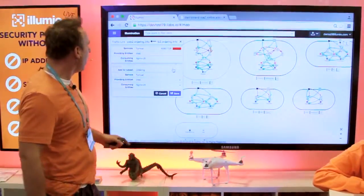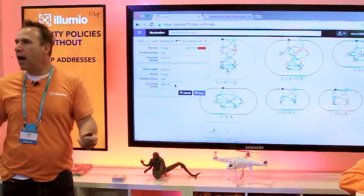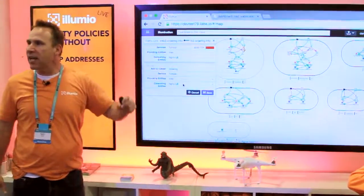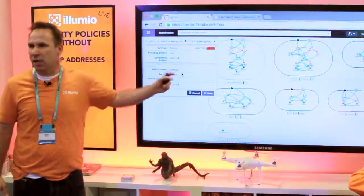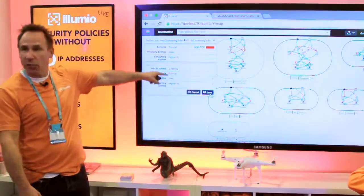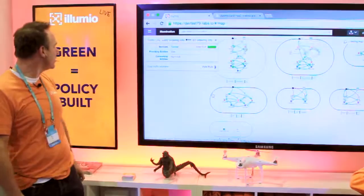So the rule that I'm about to write, I'm just going to describe what I want to have happen. I'm going to say that the Nginx load balancer can talk to the web tier, can talk to the Tomcat process. That's how you write a rule with Illumio. I'm going to have Anoop save that.